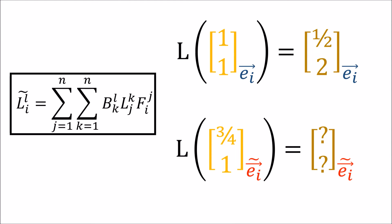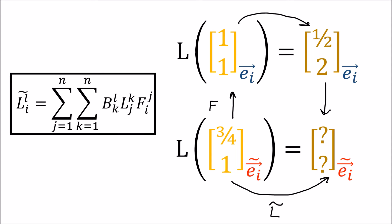Matrices, or linear maps, transform with both the forward transform and the backward transform — and here's why that makes sense. The L-tilde matrix takes us from input vector components to output vector components in the new basis. Instead of traveling directly along this arrow using the L-tilde matrix, we go in a roundabout way: first we use the forward transform to convert the new vector components to old vector components, then we apply matrix L to get the output in the old basis, and finally we use the backward transform to convert back to the new basis. So multiplying by L-tilde is the same as: forward, then L, then backward.